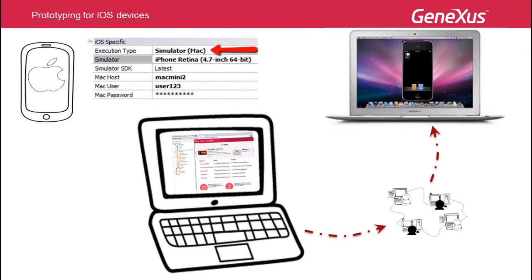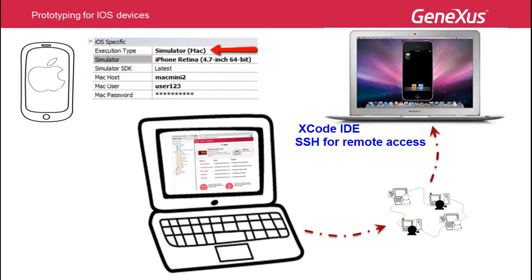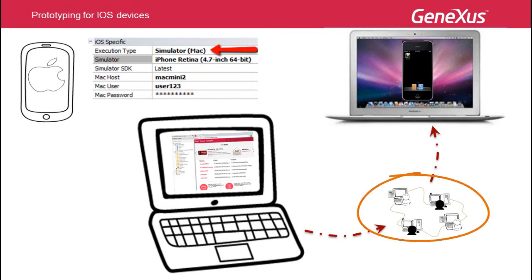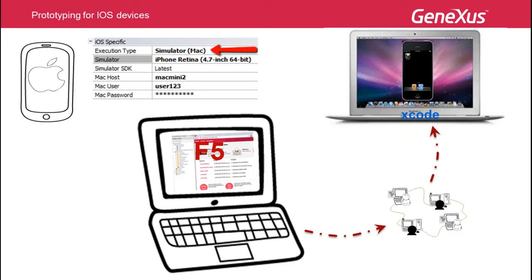The 'Simulator Mac' option enables the application to run on an emulator of the selected device on a Mac computer. The required settings include the device to be emulated, the name of the Mac computer where the application will be sent, and connection credentials — username and password. The necessary components must be installed on the Mac, which must be connected to the same network as the development computer. Upon pressing F5, the Xcode project is generated, sent to the Mac, and run using the emulator. The application doesn't need to be signed when run on the emulator.